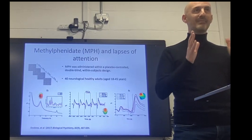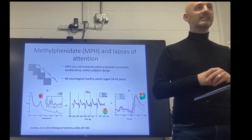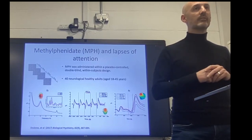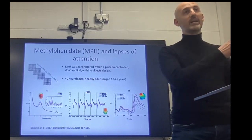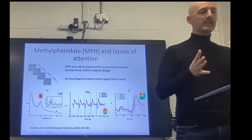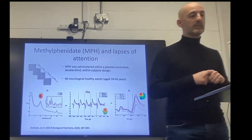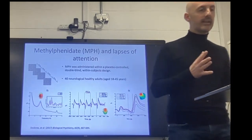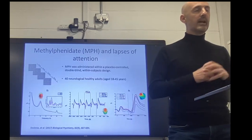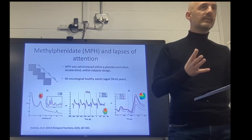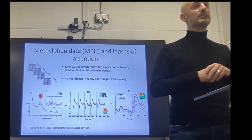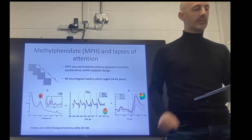Methylphenidate is an indirect agonist affecting noradrenaline quite broadly in terms of its cortical effects. It's also affecting dopamine in terms of prefrontal and striatal systems, so it's having quite a broad effect. This initial study demonstrated that methylphenidate can affect these attention-relevant signals during a sensitive task, and gives us some indication of different markers relevant to people who respond and don't respond to Ritalin.